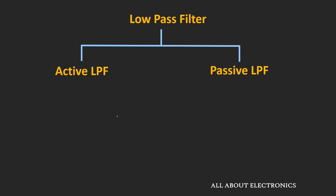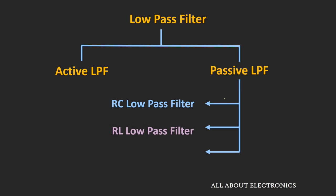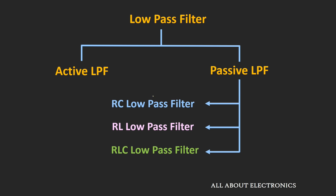The advantage of the active filter is that it also provides gain to the input signal. In the case of passive filters, the output is always less than the input. The following are examples of passive low-pass filters. In this video, we will concentrate on the RC low-pass filter.